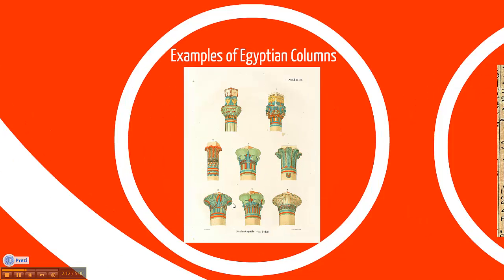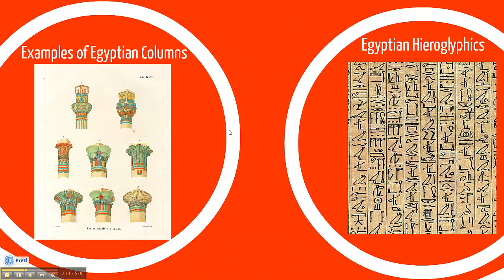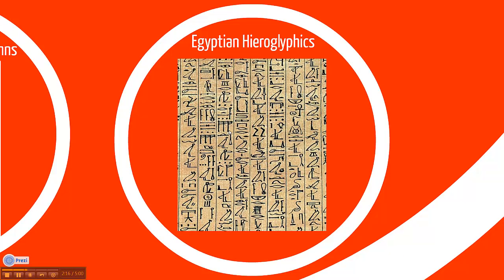Here we have some examples of columns. And here is an example of Egyptian hieroglyphics.